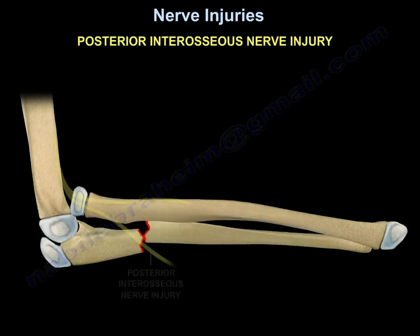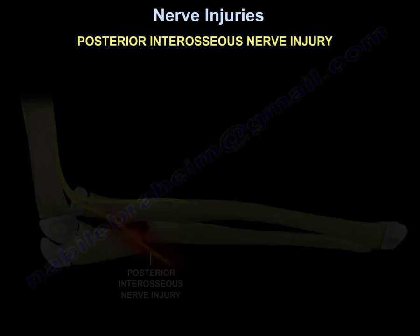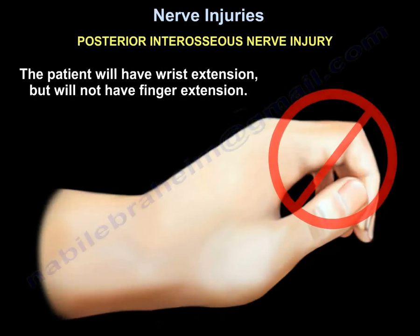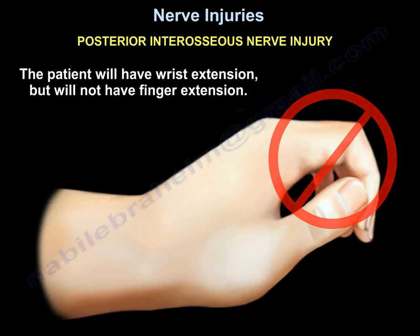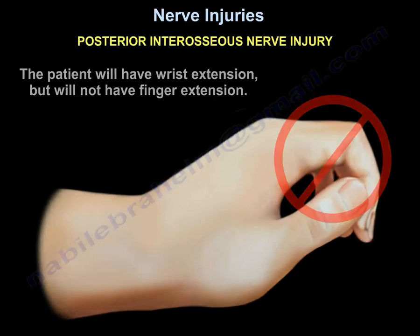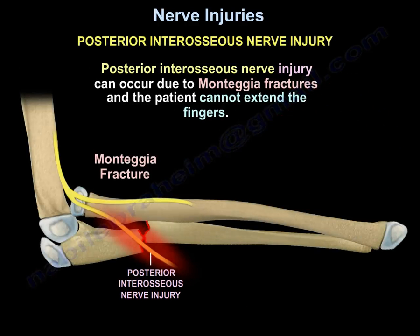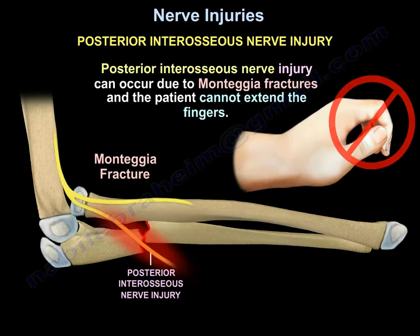With posterior interosseous nerve injury, the patient will have wrist extension but will not have finger extension. It can occur due to montasia fractures and the patient cannot extend the fingers.